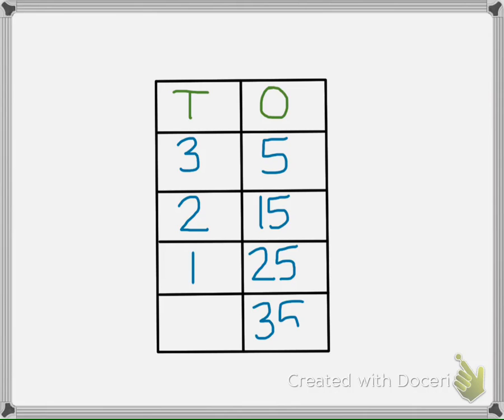Notice, each time we make 35 in a different way, the tens get smaller by one and the ones get larger by 10. This pattern is the important relationship that is needed to fully understand place value. Break one larger block into 10 smaller blocks, or combine 10 smaller blocks to make one larger block.